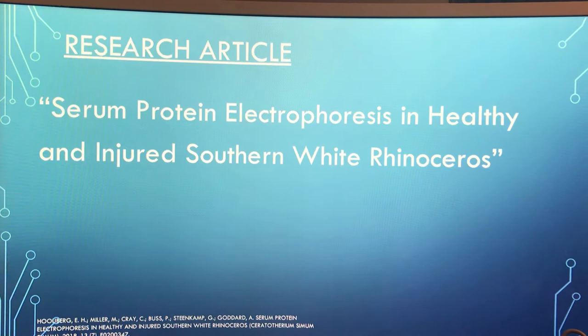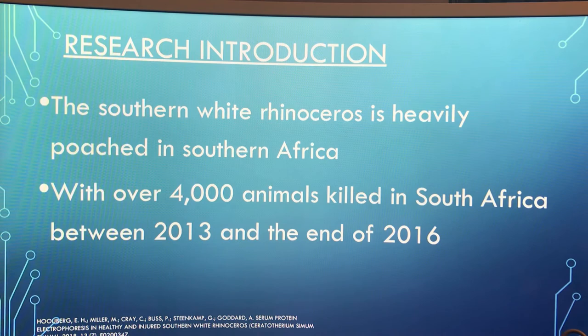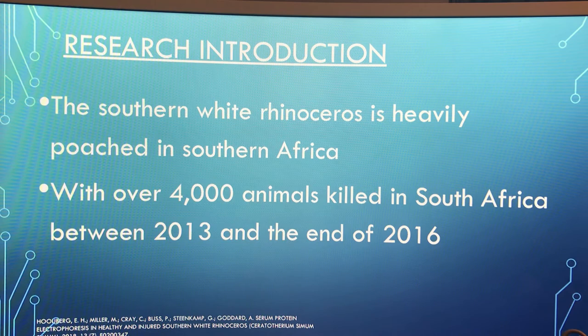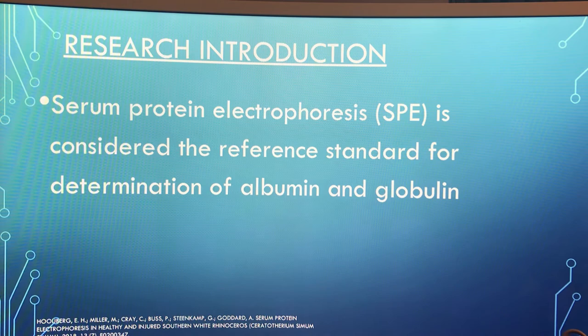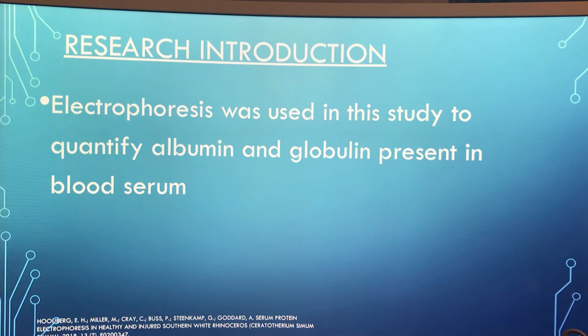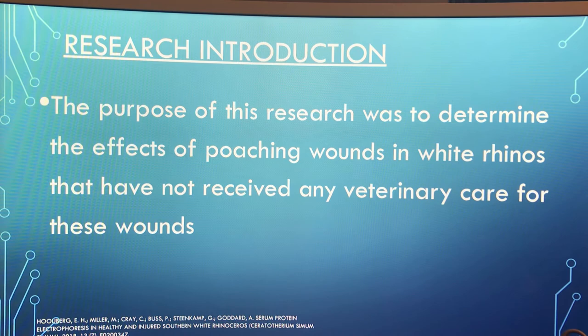The research article chosen was on serum protein electrophoresis in healthy and injured Southern White Rhinoceros. The Southern White Rhinoceros is heavily poached in Southern Africa, with over 4,000 animals killed in South Africa between 2013 and the end of 2016. Serum Protein Electrophoresis (SPE) is considered the reference standard for determination of albumin and globulin. Electrophoresis was used in this study to quantify albumin and globulin present in blood serum of rhinos, in order to determine the effects of poaching wounds in white rhinos that have not received veterinary care.